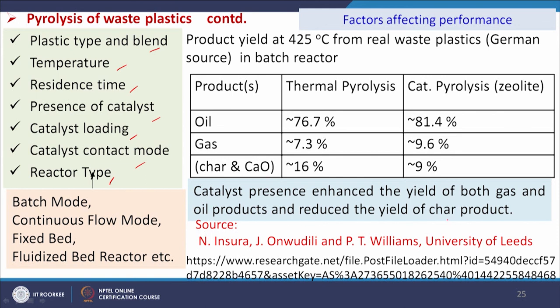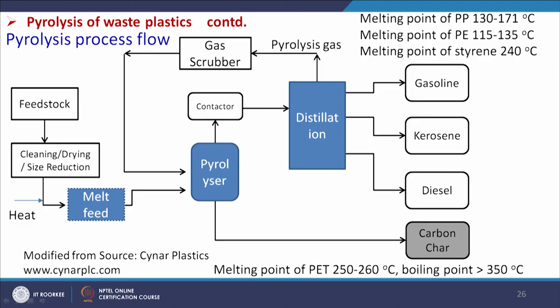The pyrolysis process flow for plastics involves: feedstock cleaning, drying, and size reduction; then heating and melting the plastics before sending to the pyrolysis reactor. After pyrolysis, vapors undergo condensation and distillation to yield different fractions such as gasoline and kerosene, plus solid carbon char. Unlike biomass, plastics — especially PE and PP — contain less char. The non-condensable pyrolysis gas goes through a gas scrubber and is returned to the pyrolyzer to supply heat. Temperature requirement is determined by the melting point of the plastic type.